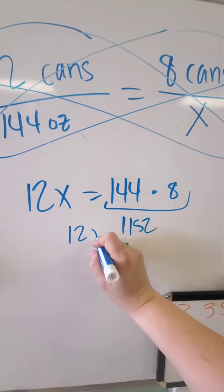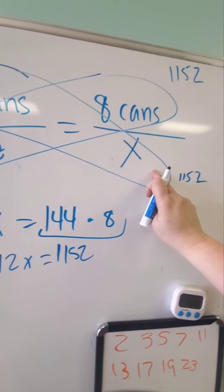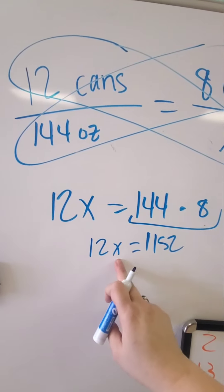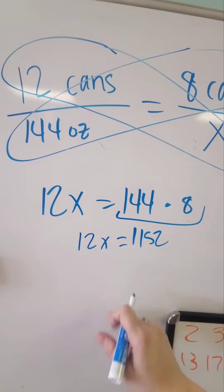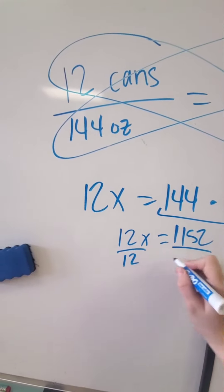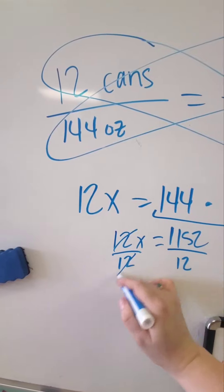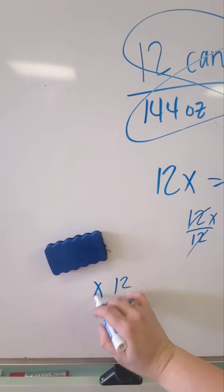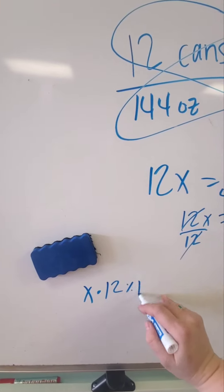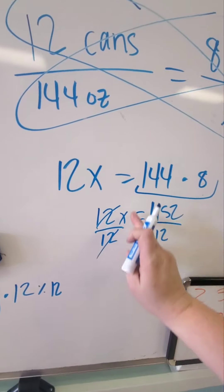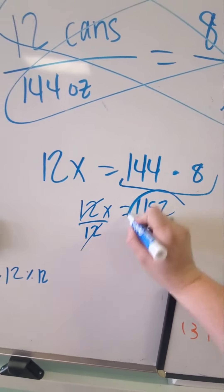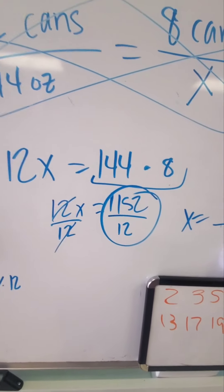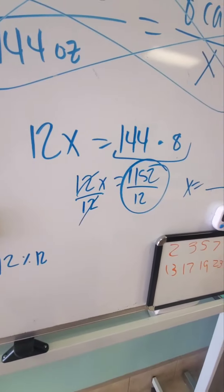So 12x is equal to 1,152. Now I have 12x equals 1,152. I'm going to divide both sides by 12, and that isolates x and makes it alone, because 12x divided by 12 is just x. So I divide both sides by 12, and plug 1,152 into the calculator to find x. That's how you do that.